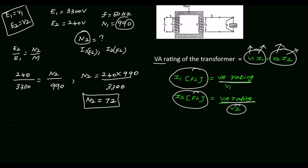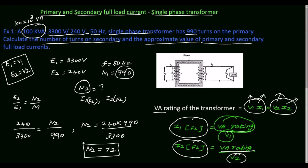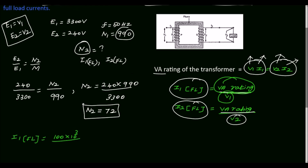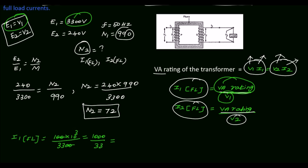Now we will calculate the primary full load current I1, which is equal to the VA rating of the transformer divided by V1. The VA rating is 100 into 10 to the power 3. For an ideal transformer, E1 equals V1, which equals 3300 volts. So I1 equals 100,000 divided by 3300, which equals 30.303 amperes. So the primary full load current is equal to 30.303 amperes.